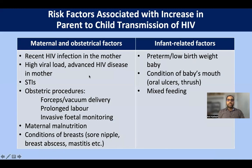Risk factors increasing HIV transmission from parent to child include maternal and obstetric factors — recent HIV infection, high viral load, advanced HIV disease, associated STIs, obstetric procedural deliveries such as forceps or vacuum, prolonged labor, invasive fetal monitoring, maternal malnutrition, and breast conditions like sore nipples, breast abscess, or mastitis. Infant-related factors include prematurity, low birth weight, oral ulcers or thrush, and mixed feeding.